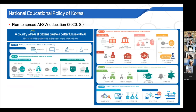In the same year 2020, the Ministry of Education also announced a plan to spread AI and software education. This plan covers from kindergarten to seniors, includes the establishment of an AI education platform for lifelong education, plans for the underprivileged and unemployed, college students, and public officials, and also includes festivals and competitions to spread AI education broadly.